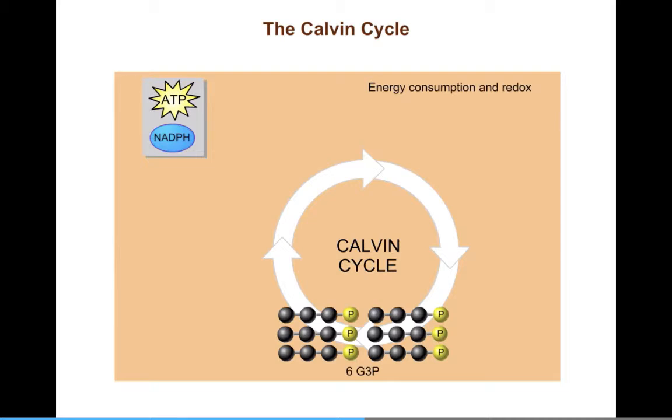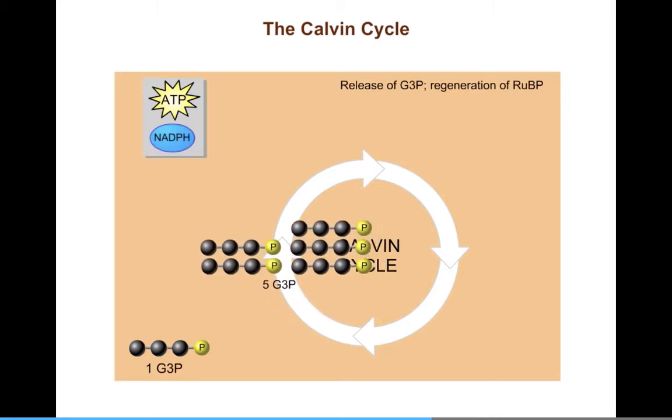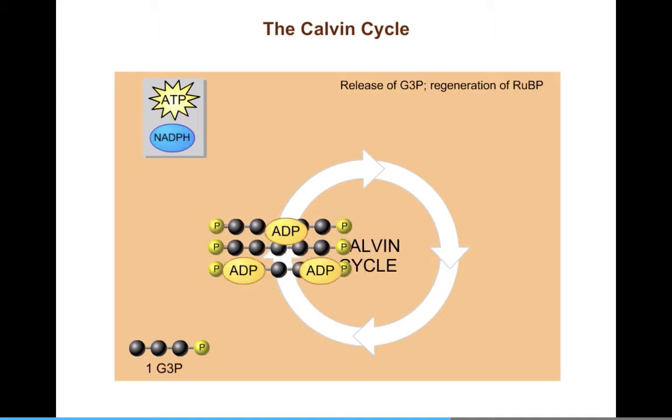G3P, or glyceraldehyde-3-phosphate, is a sugar, the final product of the Calvin Cycle. One of the G3P molecules represents the three carbon dioxide molecules fixed so far. The other five G3Ps are reshuffled to regenerate the original RuBP molecules.